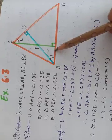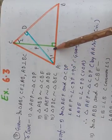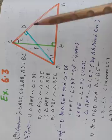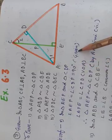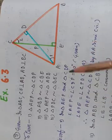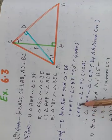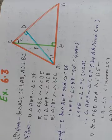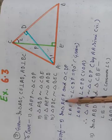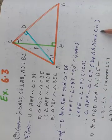In triangle AEP, this angle is 90 degrees, and in triangle CDP this angle is also 90 degrees — from the given conditions, because both are perpendiculars. Now, the other angles — angle APE and angle CPD — are vertical opposite angles. So we write: angle APE = angle CPD (vertical opposite angles). Since two angles of the two triangles are equal, we conclude triangle AEP is similar to triangle CDP by the Angle-Angle similarity criterion.